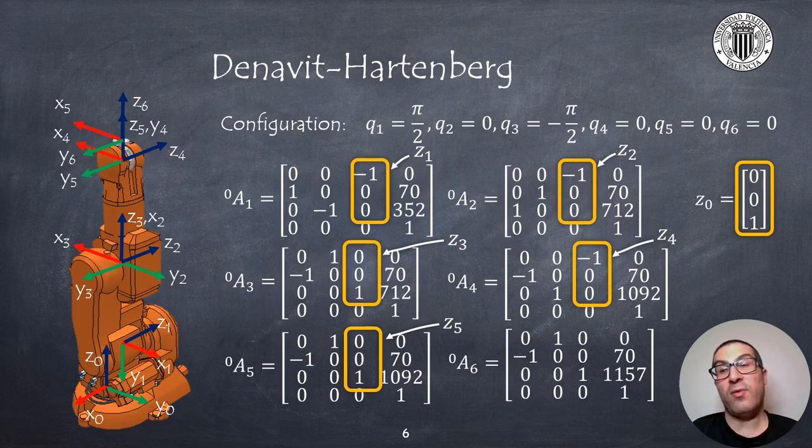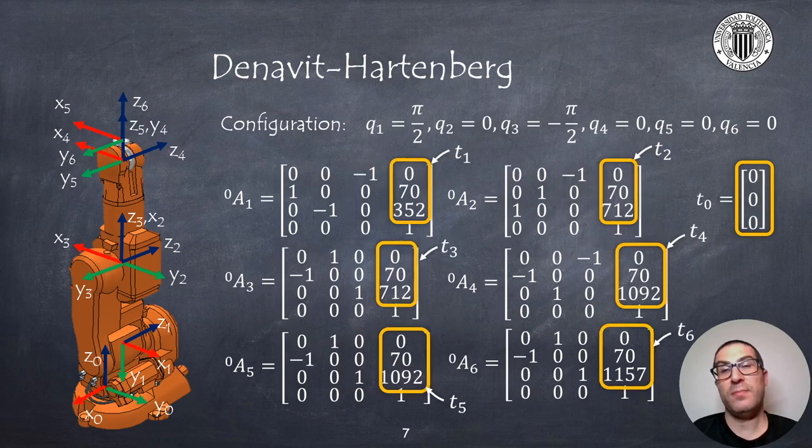After we have completed all these calculations we can extract the vector Z as highlighted from each transformation, being by definition the vector Z₀ the vector [0 0 1] as you can see. In addition to this we can also extract the position for each reference frame as indicated, being in this case the position T₀ vector a vector with zeros also again by definition.